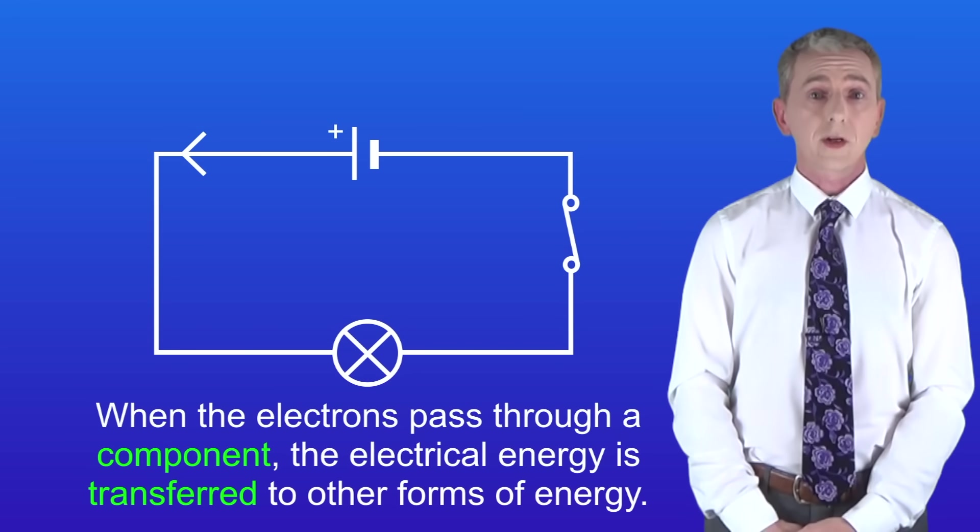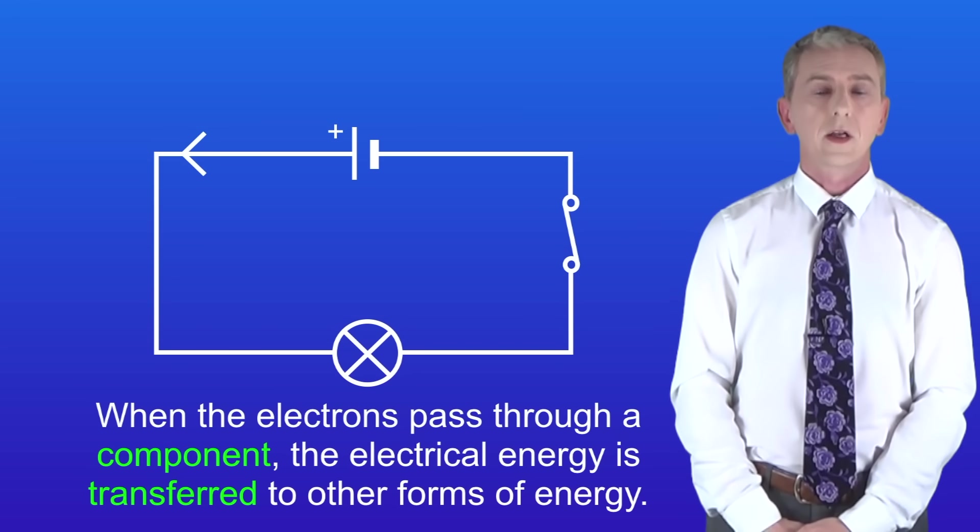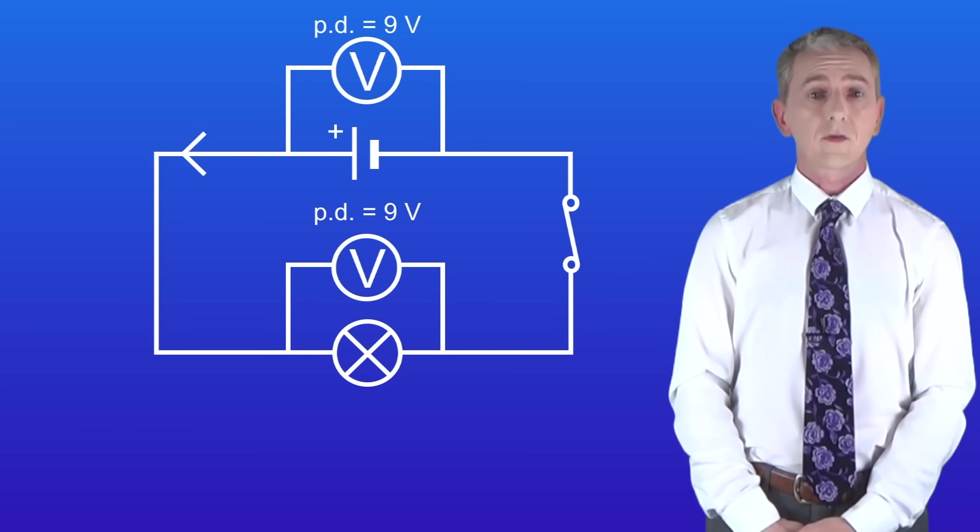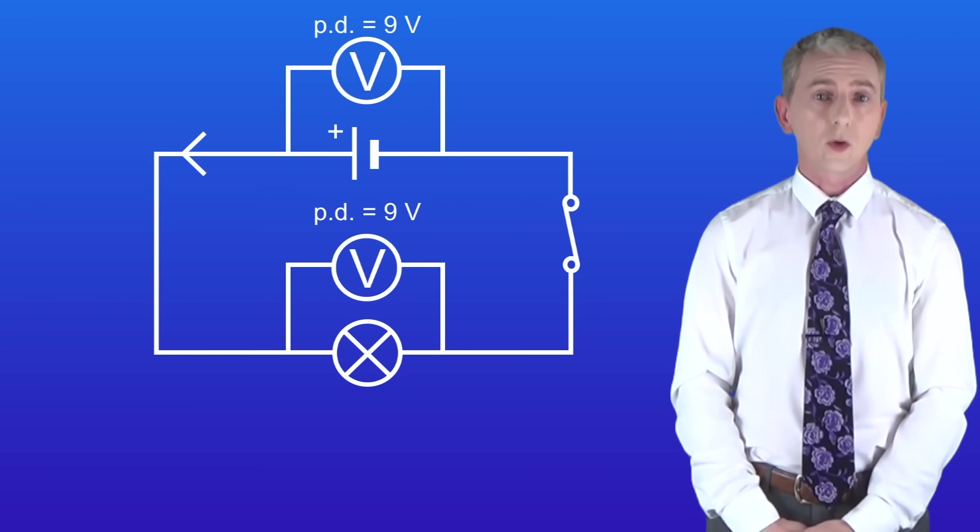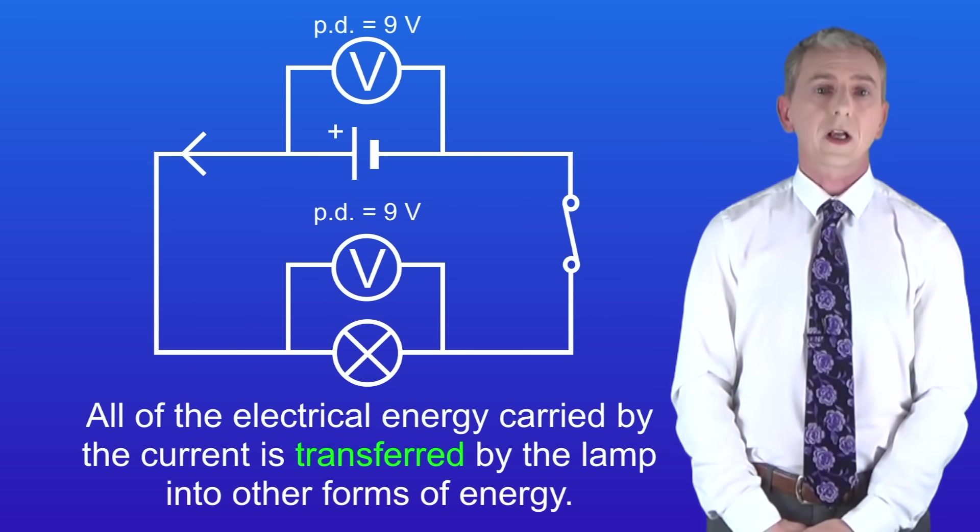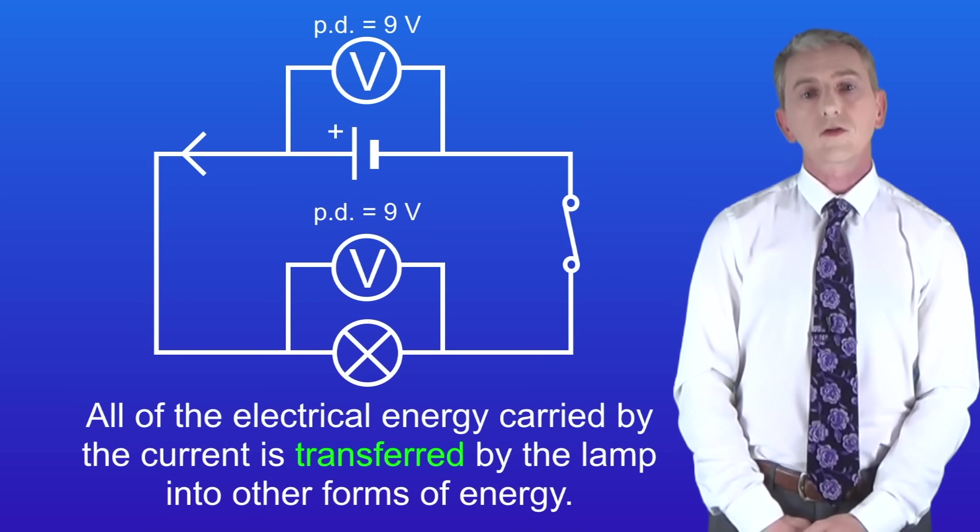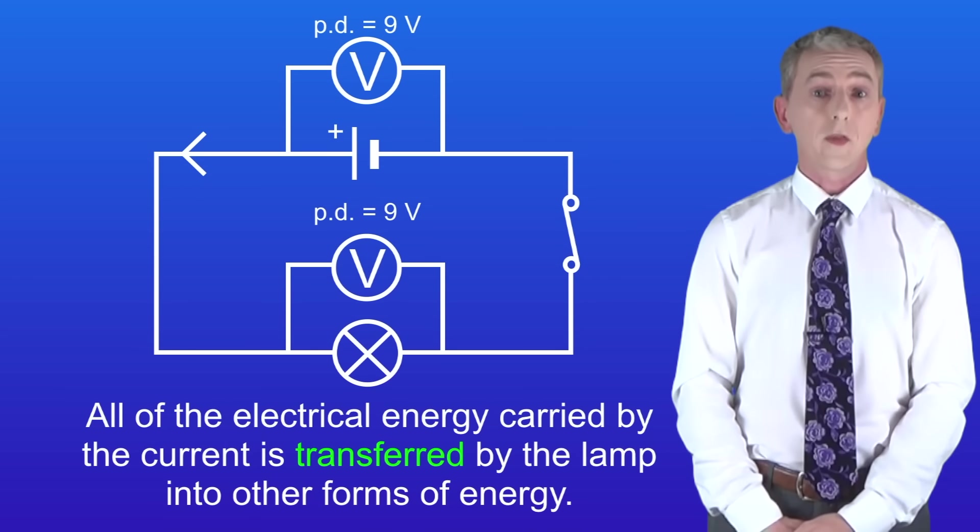We use potential difference to work out the energy transfers involved. The cell has a potential difference of 9 volts so the current is carrying 9 joules of electrical energy per coulomb of charge. The potential difference across the lamp is also 9 volts, telling us that all of the electrical energy carried by the current is transferred by the lamp into other forms of energy.